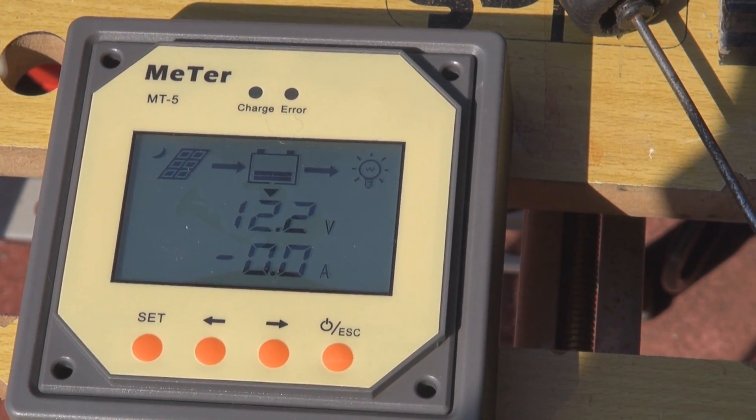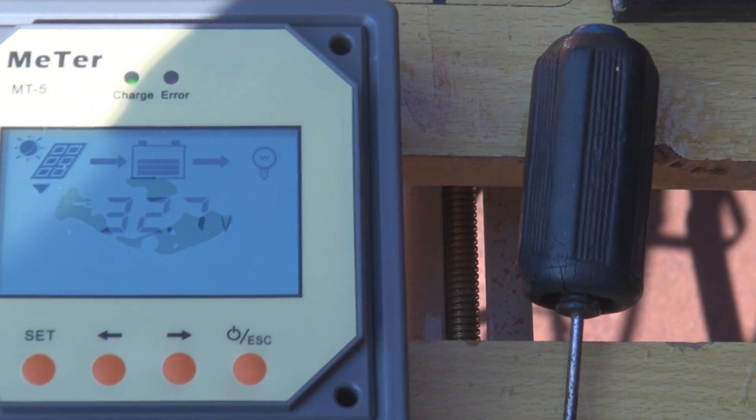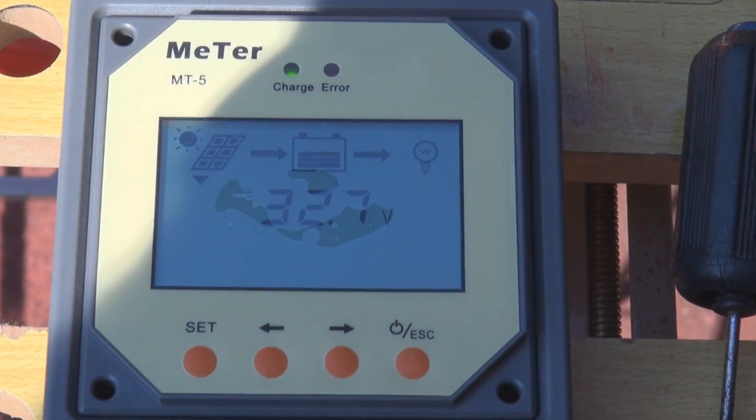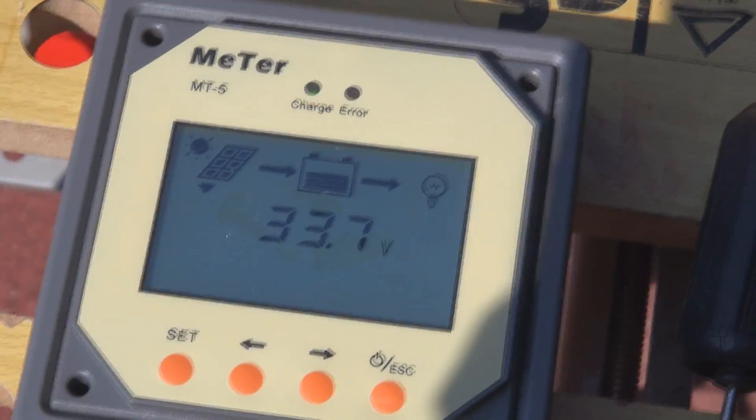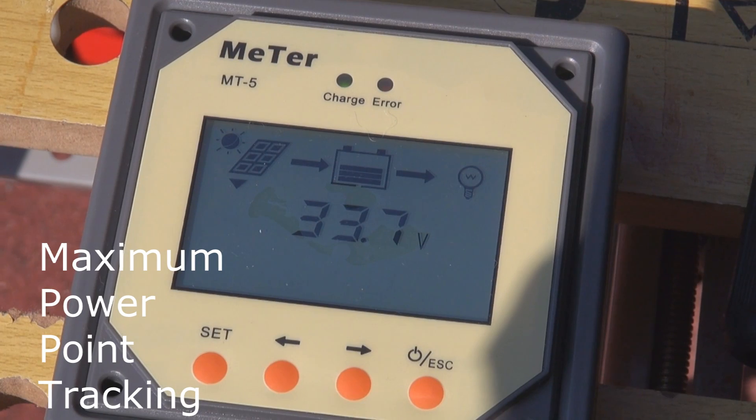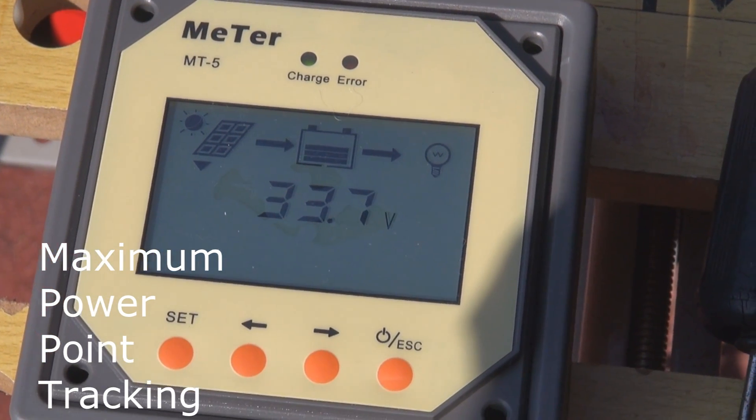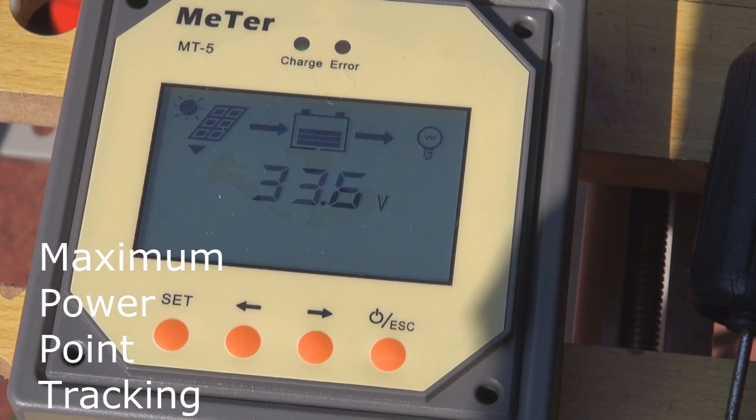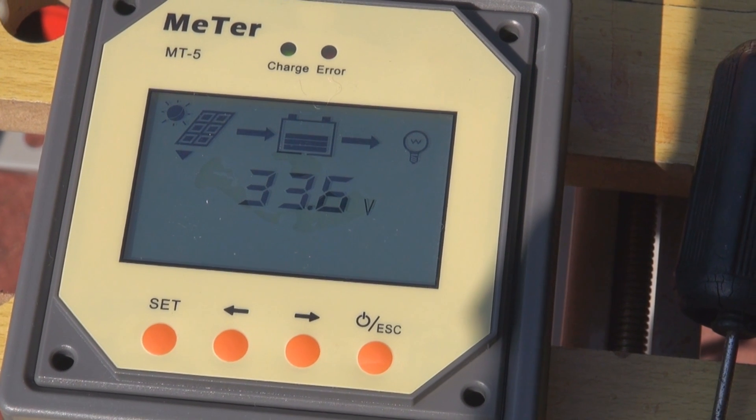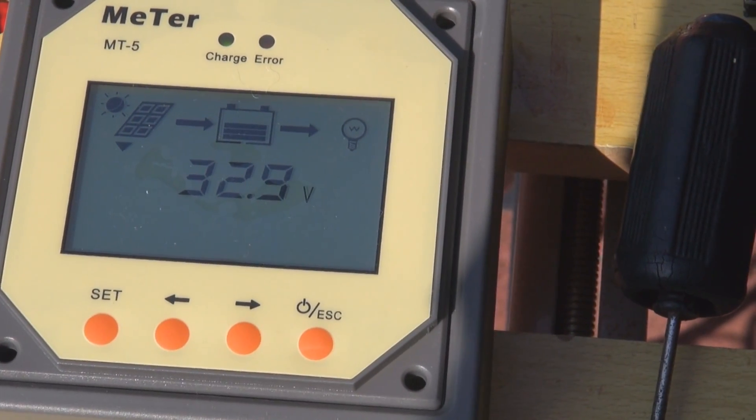Now we'll connect the solar panels. The two solar panels are connected in series, and the MPPT controller is searching for the maximum power point of the panels. It's decided to run them at 33.6 volts.